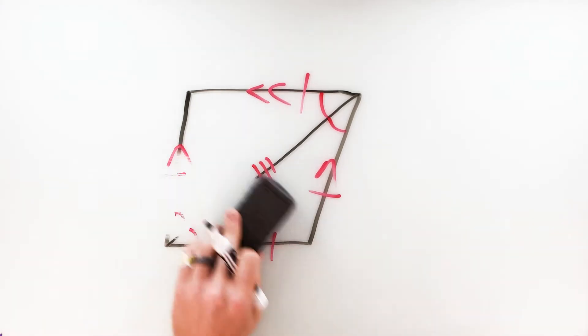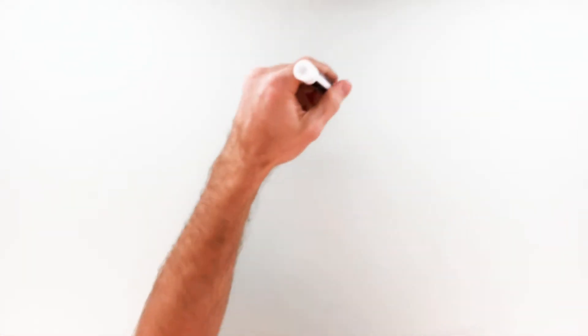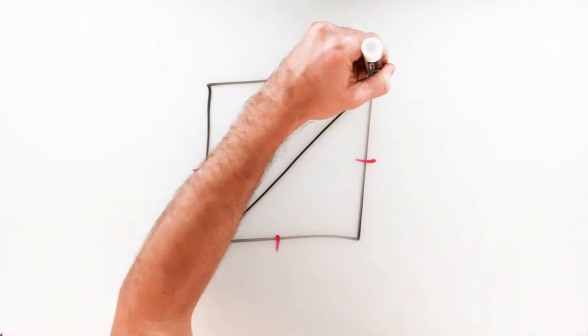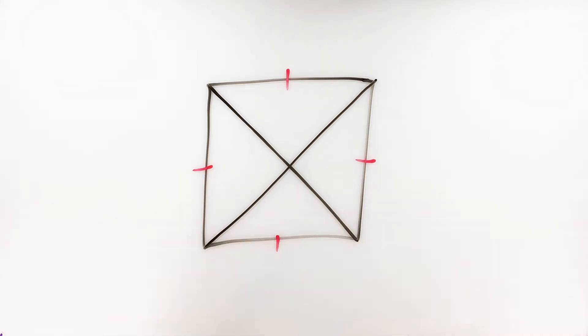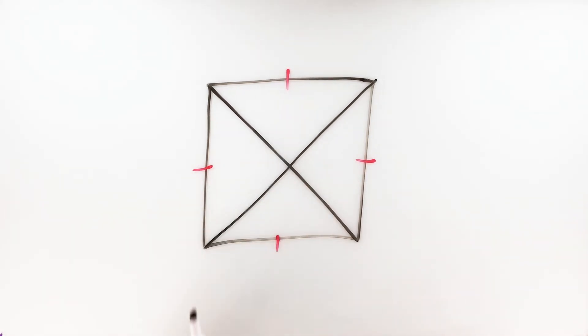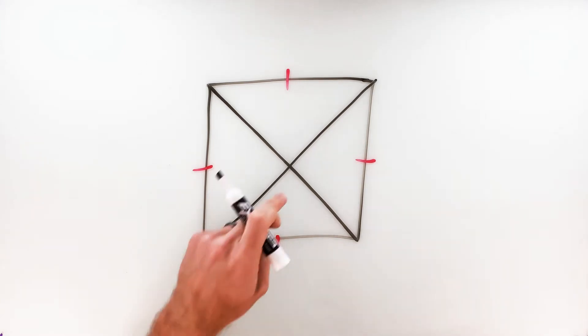Now property number two, sticking with the idea of diagonals. This time I'm going to draw both diagonals on another rhombus and mark all four sides as the same. The second property of rhombuses is that these diagonals are going to be perpendicular to one another. Perpendicular means they cross at 90-degree angles, so that intersection of the two diagonals in a rhombus is going to be a 90-degree angle all around.